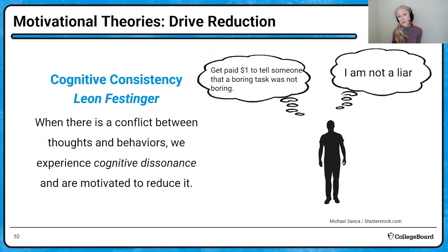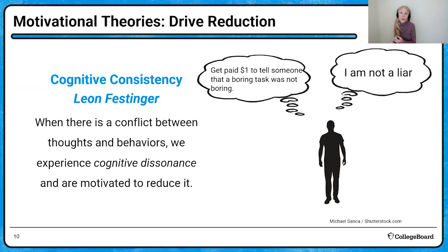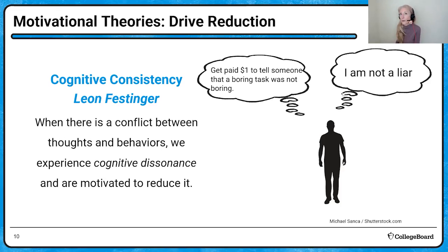I'm going to move drive reduction from biological to psychological, because we do have some uncomfortable psychological feelings — it's called cognitive dissonance. When there's a conflict between our thoughts and behaviors, we often experience dissonance. Like if you find money on the street and don't return it, you'll feel dissonance — you might call it guilt — but we're motivated to reduce that dissonance. You might say, somebody had $1,000 in the wallet, they probably didn't need it anyway.